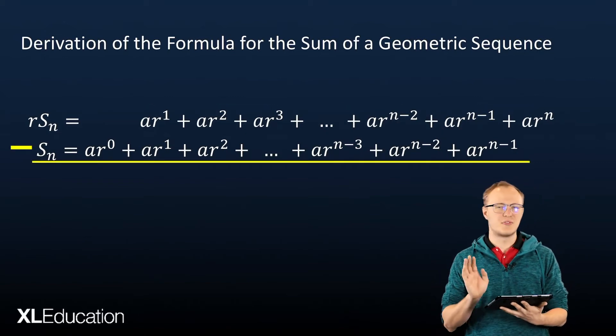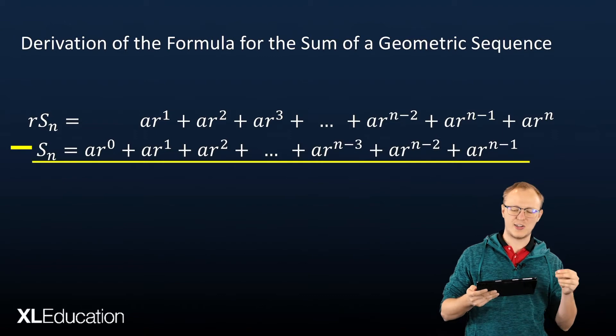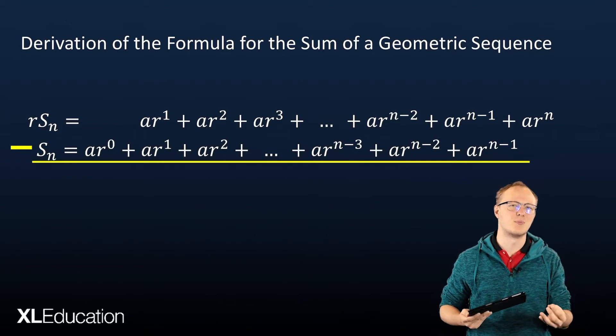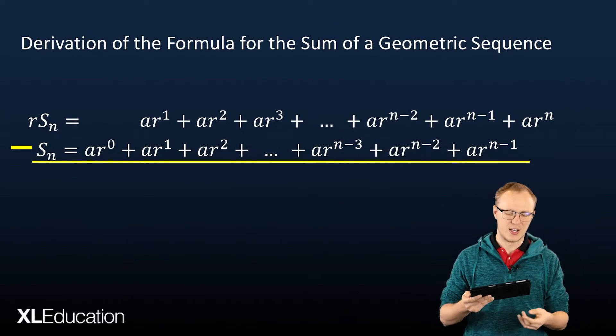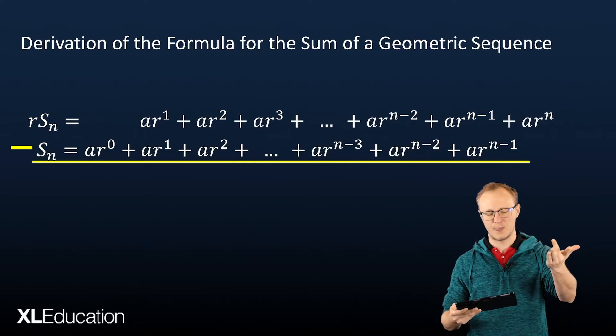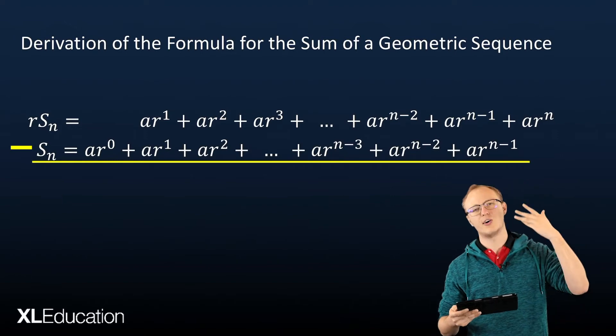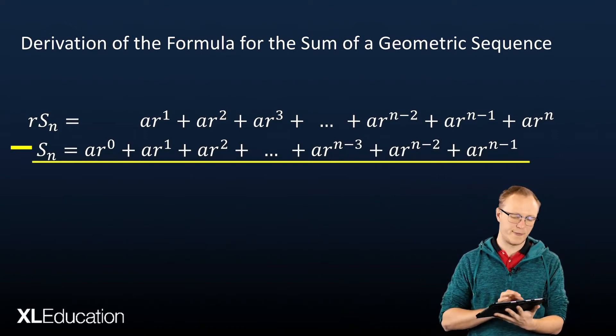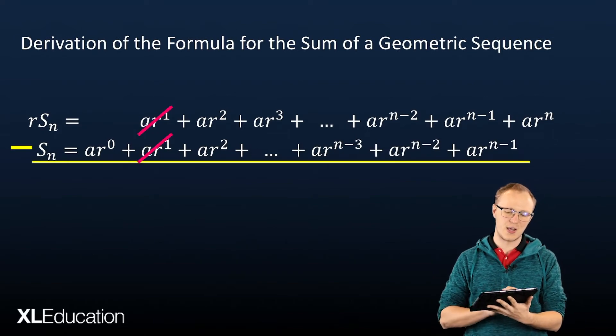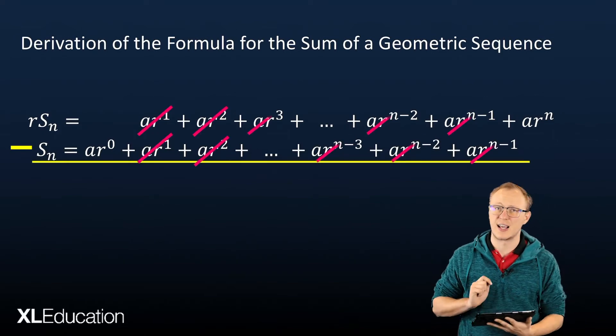Now, because we've scooched those terms over, we actually see that the same term is duplicated several times in each of those two things. So we get ar to the 1 at the top and ar to the 1 at the bottom, ar squared at the top, ar squared at the bottom. So when we subtract, we find that all of these terms end up cancelling out.